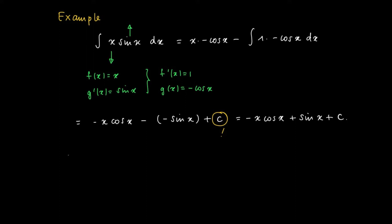So let's check whether this is correct. You can always, if you have a candidate primitive, take a derivative to see whether you end up with the original function you started off with. We take a derivative of minus x cosine of x plus sine of x plus C.